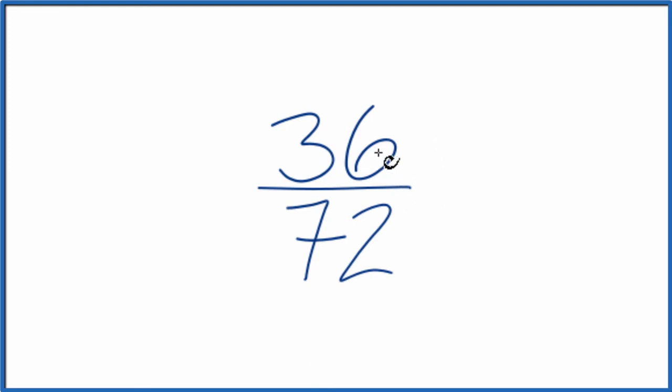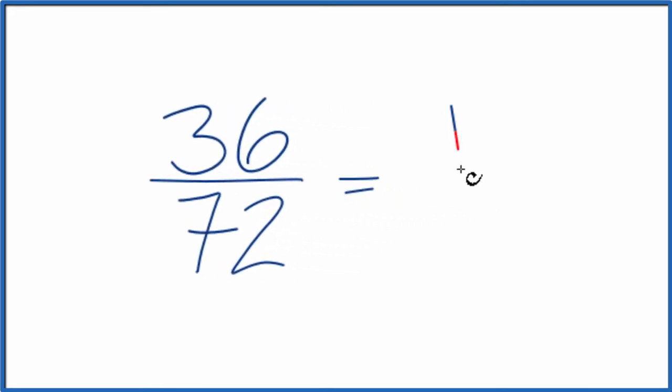I know that 36 goes into 72 twice. 36 times 2, that's 72. So I could say 36 divided by 36 is 1, and 72 divided by 36, that's 2. And we've simplified the fraction 36 72nds down to 1 half.